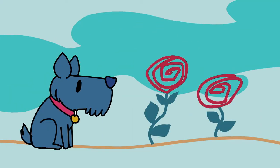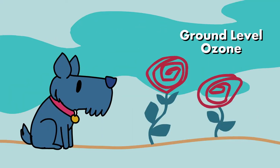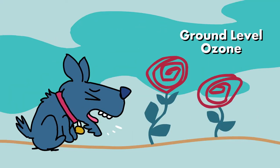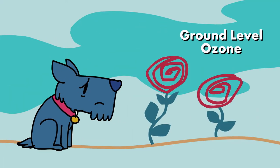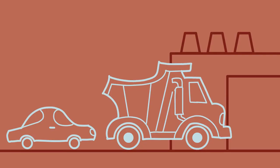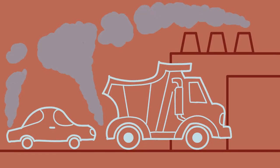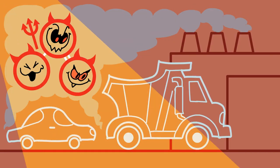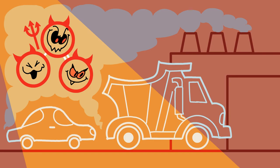Ozone at ground level is a toxic air pollutant that can worsen respiratory issues, damage lungs, and harm wildlife. Ground-level ozone is created when certain air pollutants are exposed to sunlight.